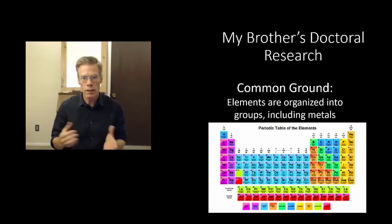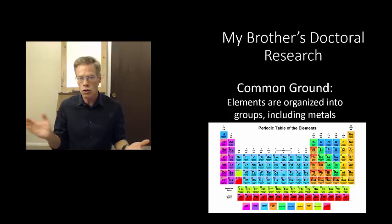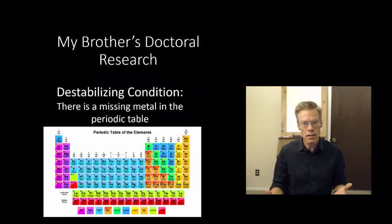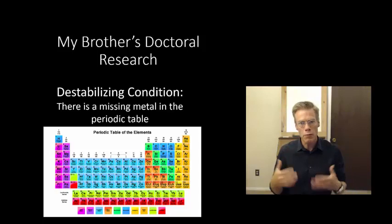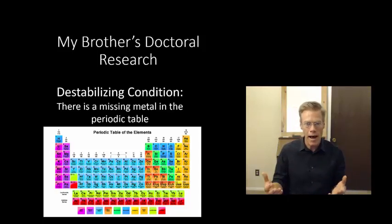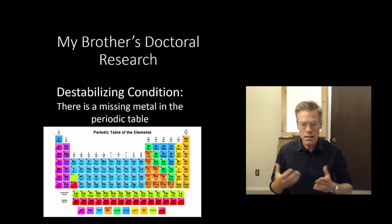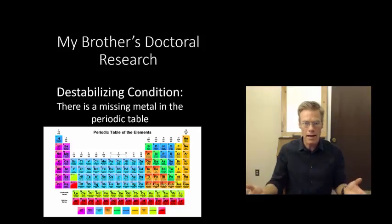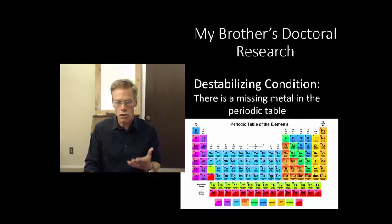So in this case, the common ground is a little bit different. The common ground here is elements are organized into groups, including metals. We all know that. If you took high school chemistry, you know that. But there's a destabilizing condition. And this is something I don't fully grasp. My brother has explained this to me a few times, but I'll just explain it the best I can. The destabilizing condition is that there's a missing metal in the periodic table. So we know that there are certain elements that are classified as metals. But according to patterns that we see, we should predict that there would be one more metal than there is. And so physicists have been trying to figure out what could be that missing metal for some time.